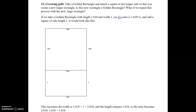I'm presenting number 12 from assignment number 9, where we take a golden rectangle and attach a square to the longer side to create a new larger rectangle. We want to see if this will give us a golden rectangle.